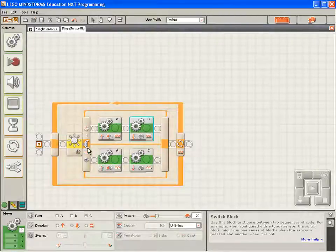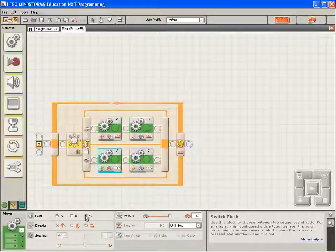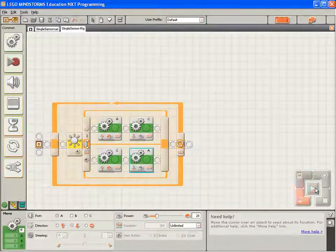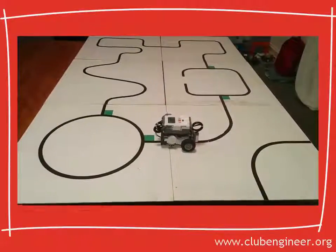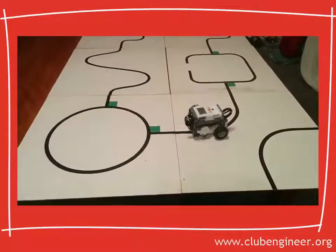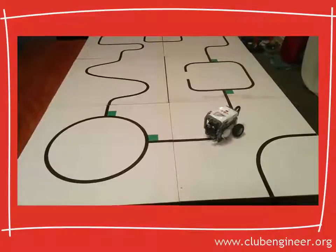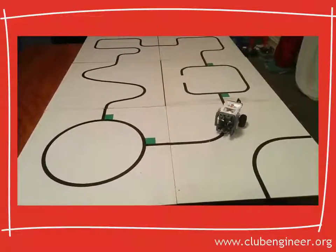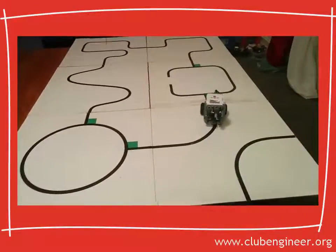And when the light sensor on port 1 sees black, we want to run motor C forward and motor A slowly in reverse. So, we compile, download and run this program. And we can see that it's successfully tapping the right hand side of the line.